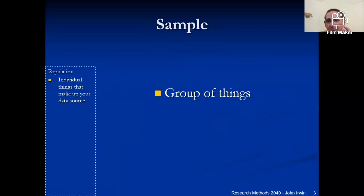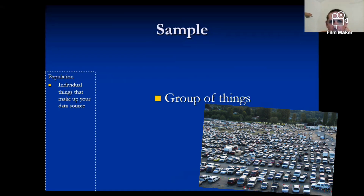Then there's the sample. It's the small set that represents the big population. And that is what you did in your exercise here with the vehicles in the picture. You've got the population — how do you make sense of how many there are?